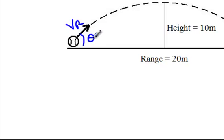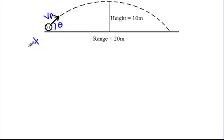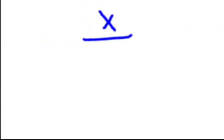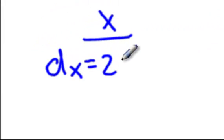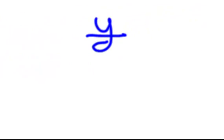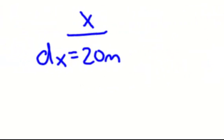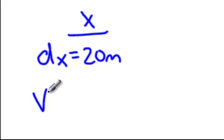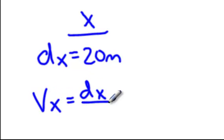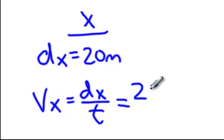That's what we're going to be trying to find, which means we want to split things up into x and into y. What do we know about the x? I know the range, which is the displacement in the x, which is 20 meters. What do I know in the y? I know the height, or the displacement in the y, is 10 meters. The only equation we know in the x direction is vx equals dx over t. I don't know anything about the velocity in x or the time — the only thing I know is my displacement in x is 20 meters. So I'm going to have to find that time using my y.